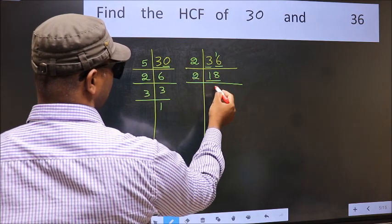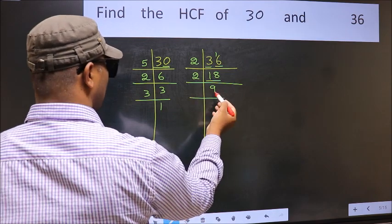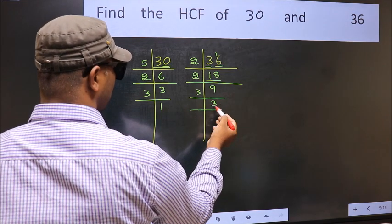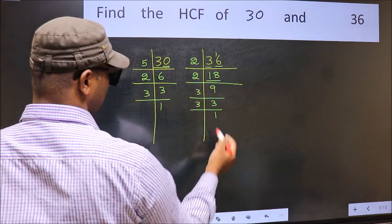Now 18 is 2 times 9 is 18. 9 is 3 times 3 is 9. Now 3 is a prime number, so 3 times 1 is 3.